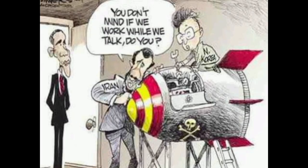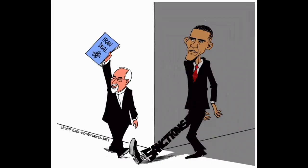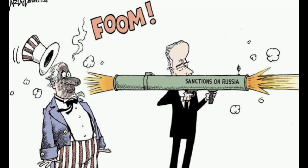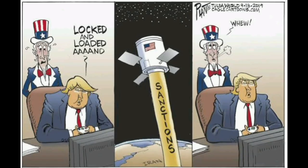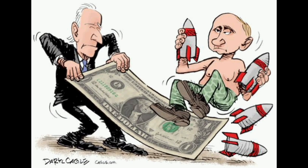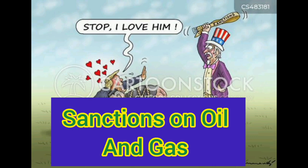The European Union, US, UK and Canada have also frozen the assets of Russia's central banks. This means there is a complete ban on transactions between major Russian banks and other international banks. Russian banks have also been removed from the international financial messaging system SWIFT, which means that due payments for Russian oil and gas will be delayed.